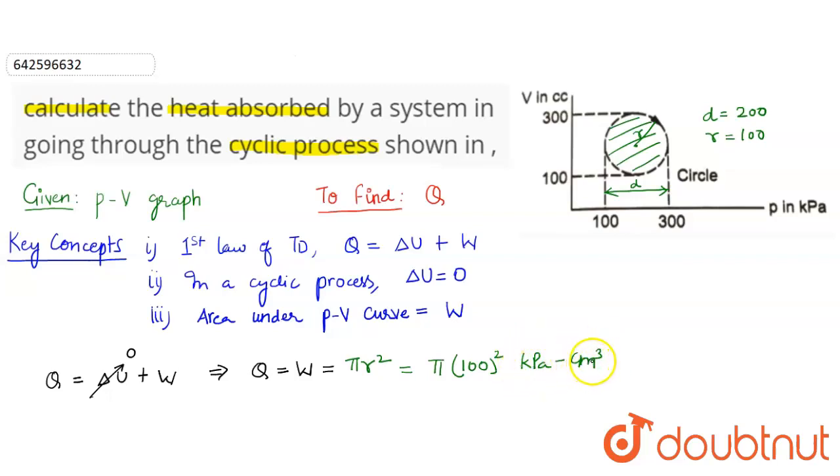So the heat absorbed is the work done and that is equals to π times 100 square. π would be 3.14, 100 square would be 10 to the power 4. Kilopascal in terms of pascal would be 10 to the power 3 pascals, and centimeter cube in terms of meter cube would become 10 to the power